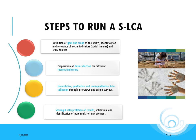Let us present the main steps to conduct a social life cycle assessment. The first step is to define the goal and the scope of the study, as well as identify and assess the relevance of different social indicators or social themes and different groups of stakeholders.